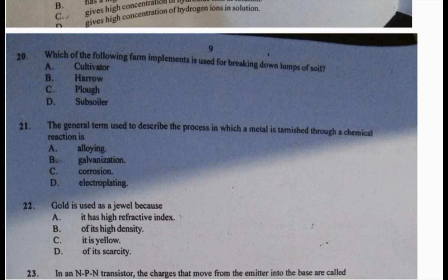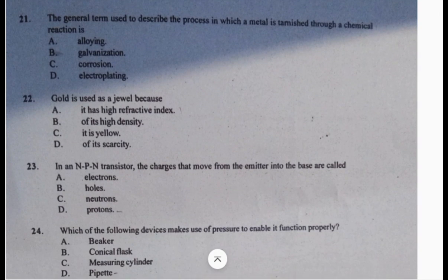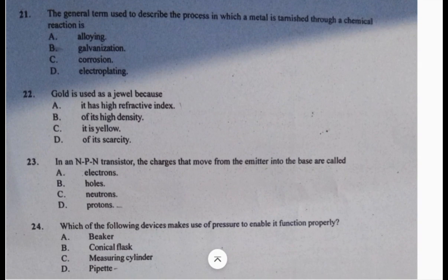22: gold is used as a jewel because of its scarcity. Very simple - something that is common will not be used as a jewel. 23: in an NPN transistor, the charges that move from the emitter into the base are electrons, holes, neutrons, or protons. You should know C and D are out, so the answer is B, holes.